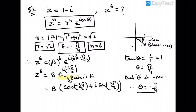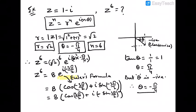That is from Euler's formula, which will give 8 times, now cos minus theta is cos theta, so it will be cos 3 pi by 2, and sine minus theta is minus sin theta, so we get plus i minus sin 3 pi by 2.